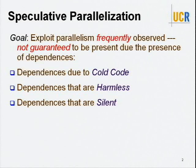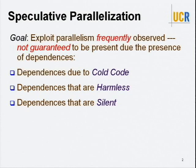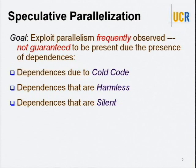I'll be talking about speculative parallelization. The goal is that you may have programs where, when you run them, you observe that there is parallelism, but you're not able to statically parallelize the programs. This could be due to a number of reasons. For example, you could have part of the code which is very infrequently executed — dependencies could arise from there, but in most cases when you don't execute it, you may observe parallelism. Or it could be because there are dependencies that are really harmless, so if you ignored them in parallelization it wouldn't hurt the program. Or it could be because you read and write memory, but you overwrite a value with the same value, so those dependencies actually don't have any impact.